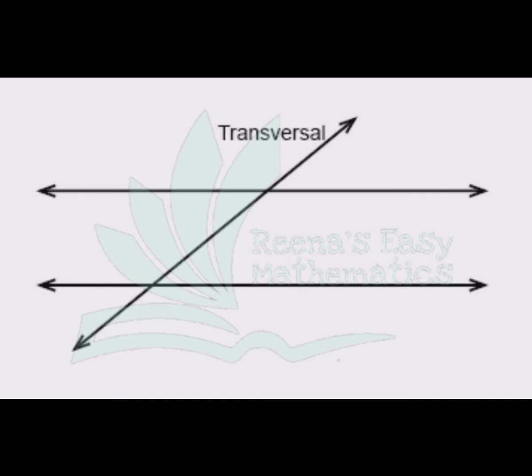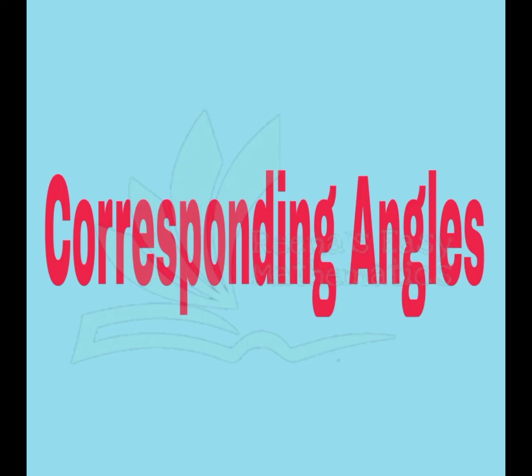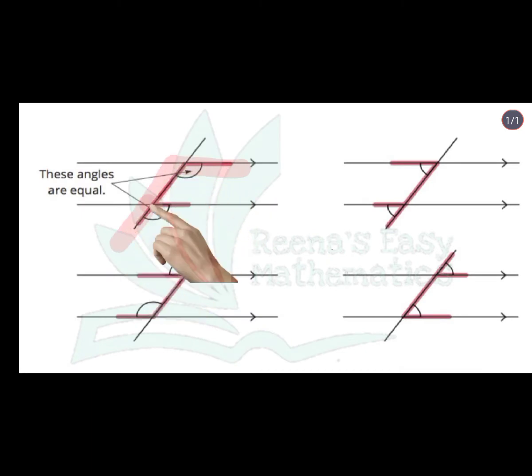In this figure, transversal is also visible. By the combination of parallel lines and transversal, we are having corresponding angles also. So let's start corresponding angles. Corresponding angles - you always make F. It can flip or tilt. It can also make F, but you make F. That is the corresponding angle.